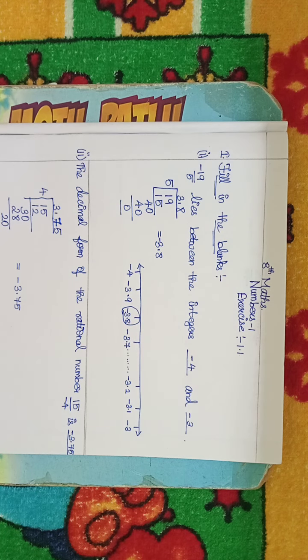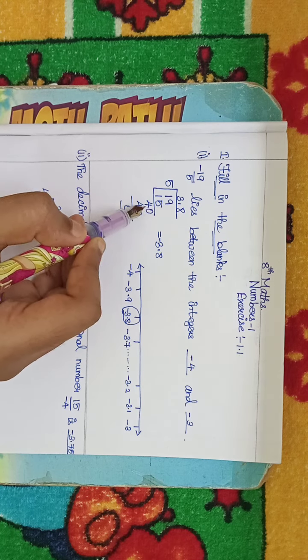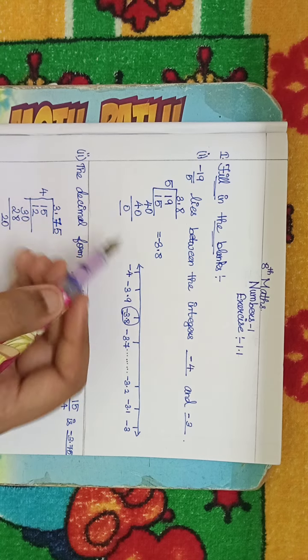19 by 5. Now, 5 times 3 is 15, balance 4, add 0. 5 times 8 is 40. Basically...